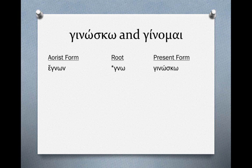Now, to us at this point it probably looks a little strange. It forms directly from the root of the lexical form, or the present form, which is ginosko. The aorist form is egnon — you can see there's the addition of the augment on the front, and then the first person singular secondary ending on the end. So the form is egnon. If ginosko means 'I know,' egnon would mean 'I knew.' This illustrates how the second aorist form forms directly from the root.